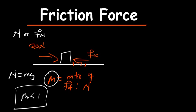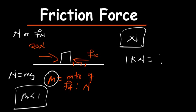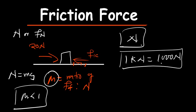The SI unit for force is newtons. We need to understand that in 1 kilonewton, there is actually 1000 newtons. So this is the conversion that you need to know. In most cases, sometimes they are going to be using kilonewtons.